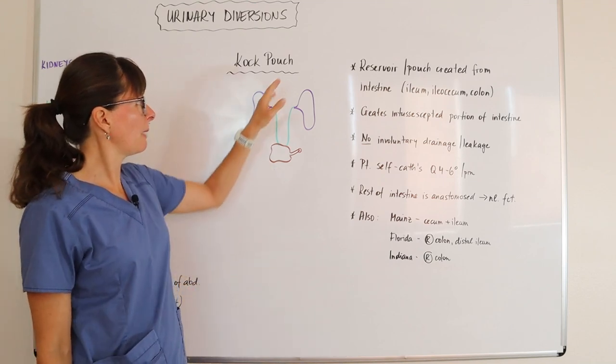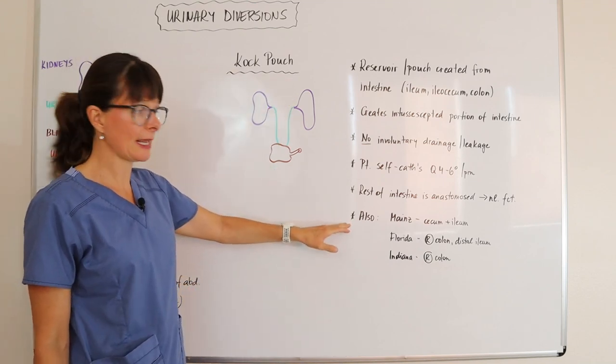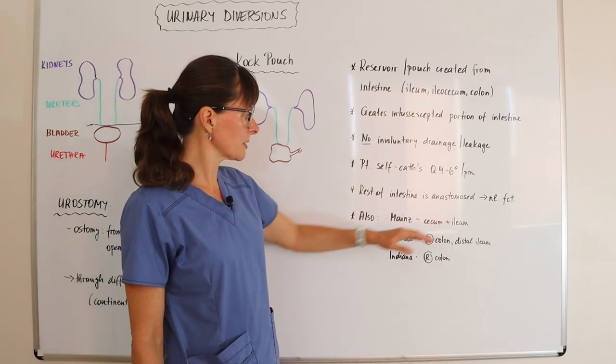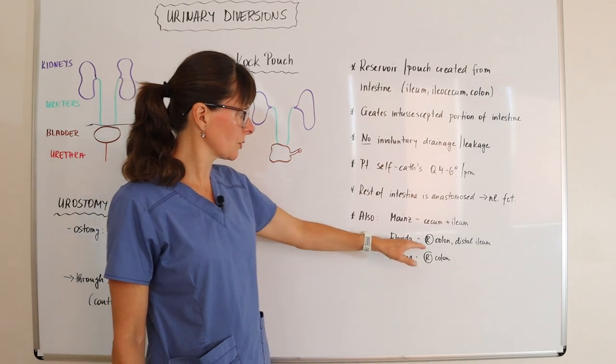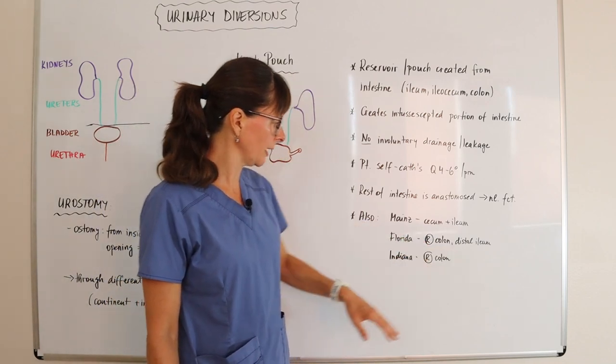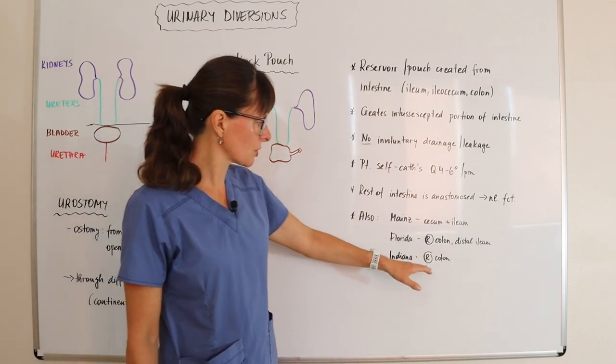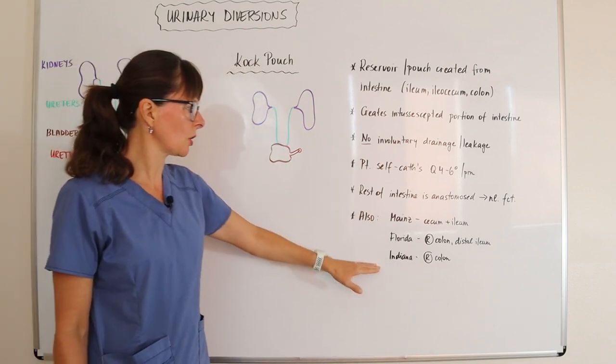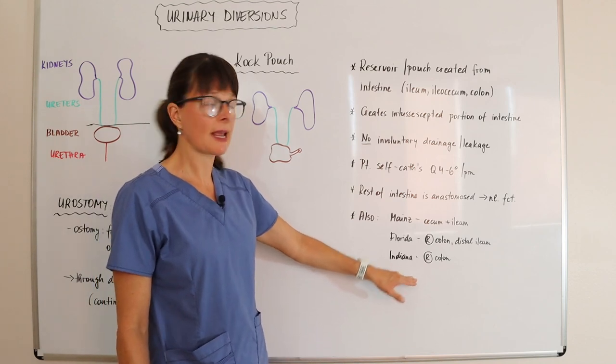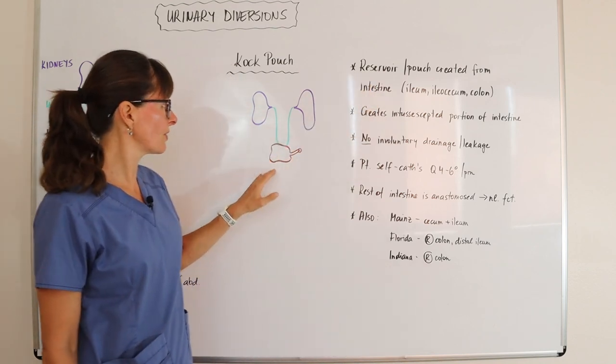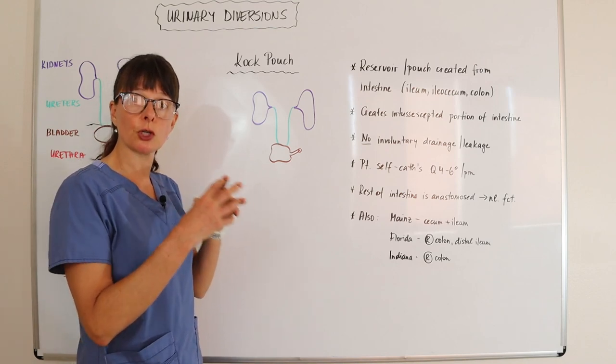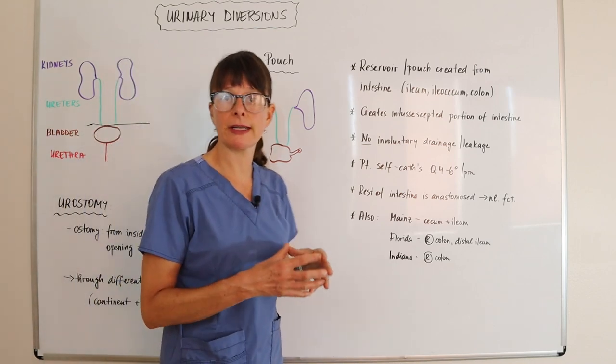There are other types of pouches which have different names. It can also be a Maine pouch, where the cecum and ileum is used, the Florida pouch that uses the right colon or distal ileum, and the Indiana pouch that uses the right colon. They all function the same way. It just depends on what part of the intestine has been used to create this reservoir to collect the urine that no longer can go to the normal anatomical site of the bladder.